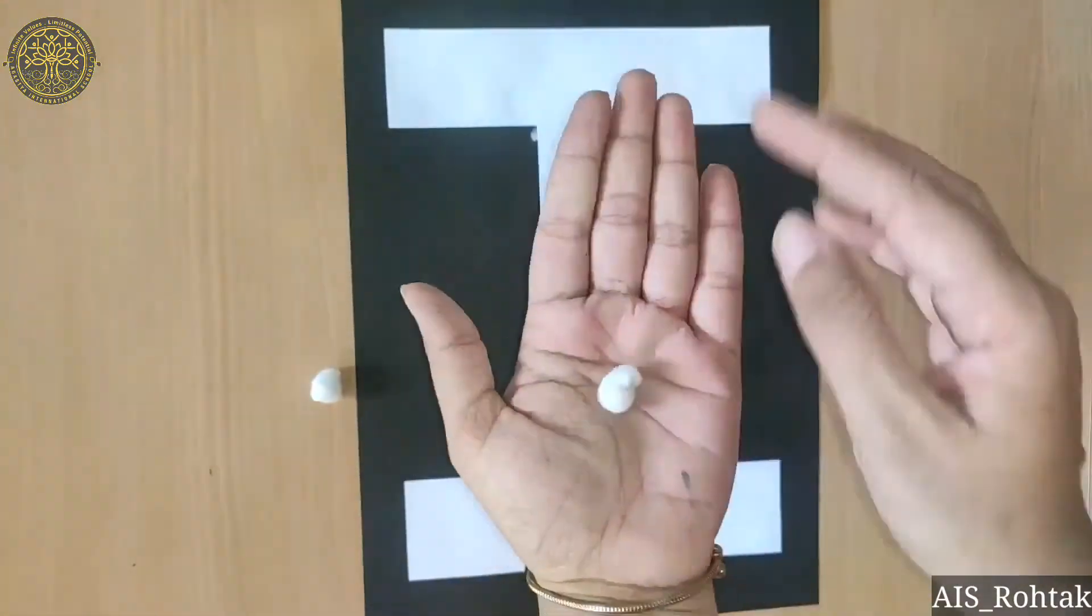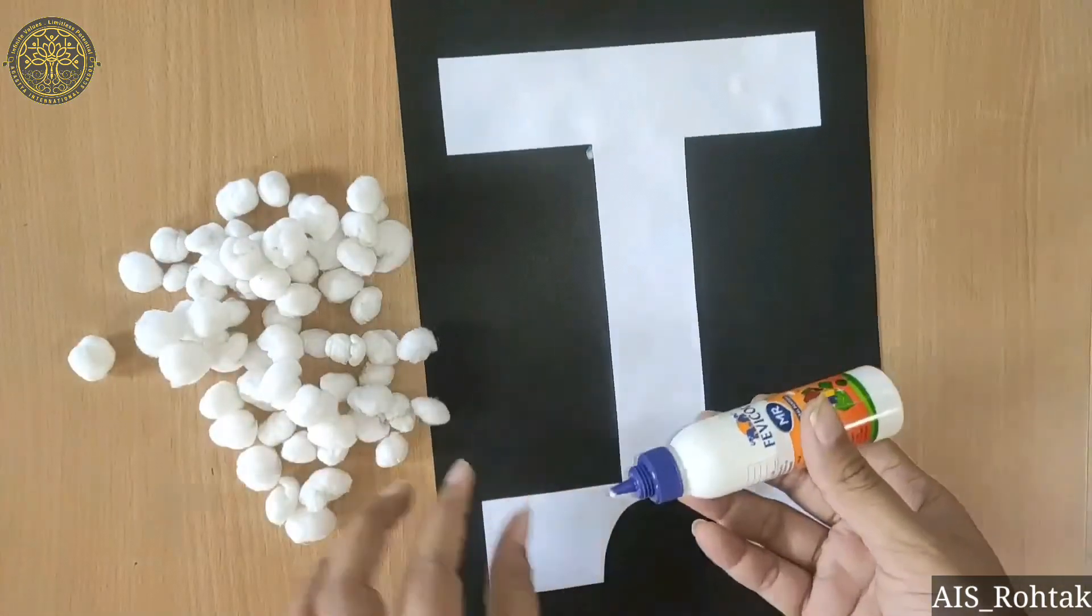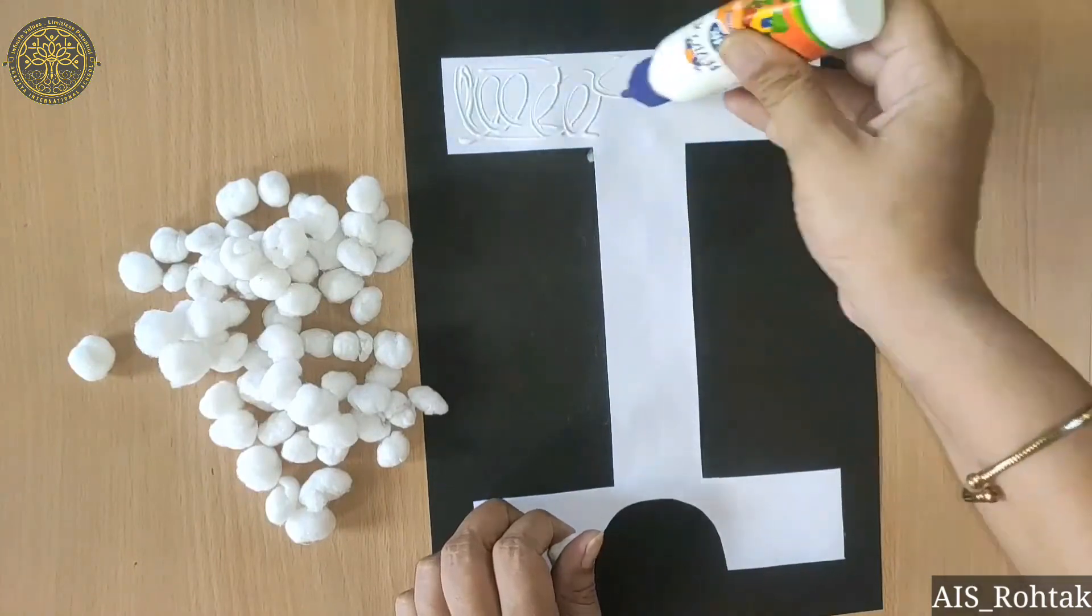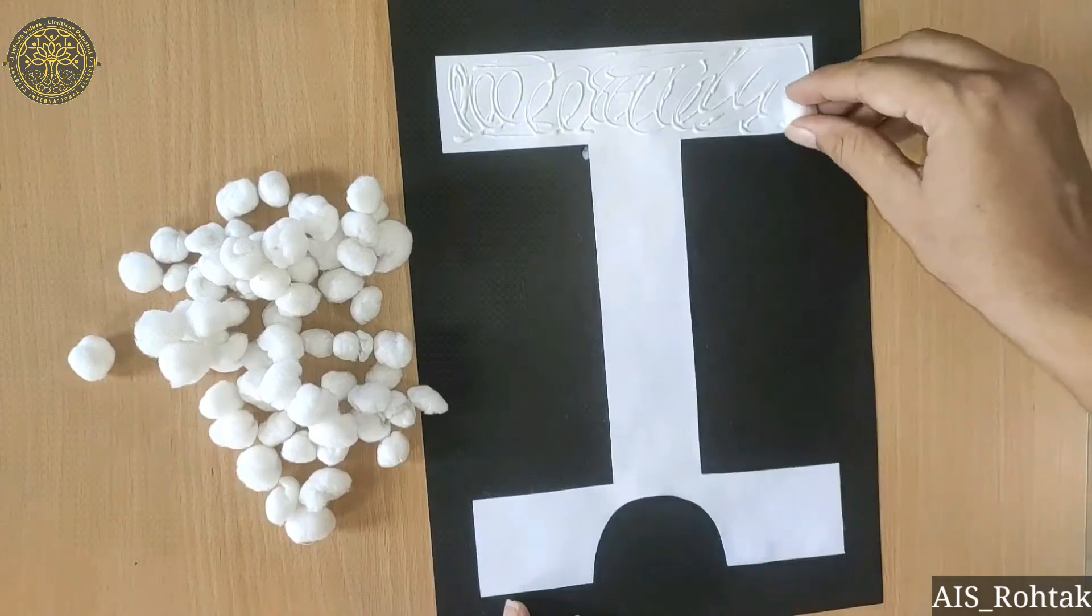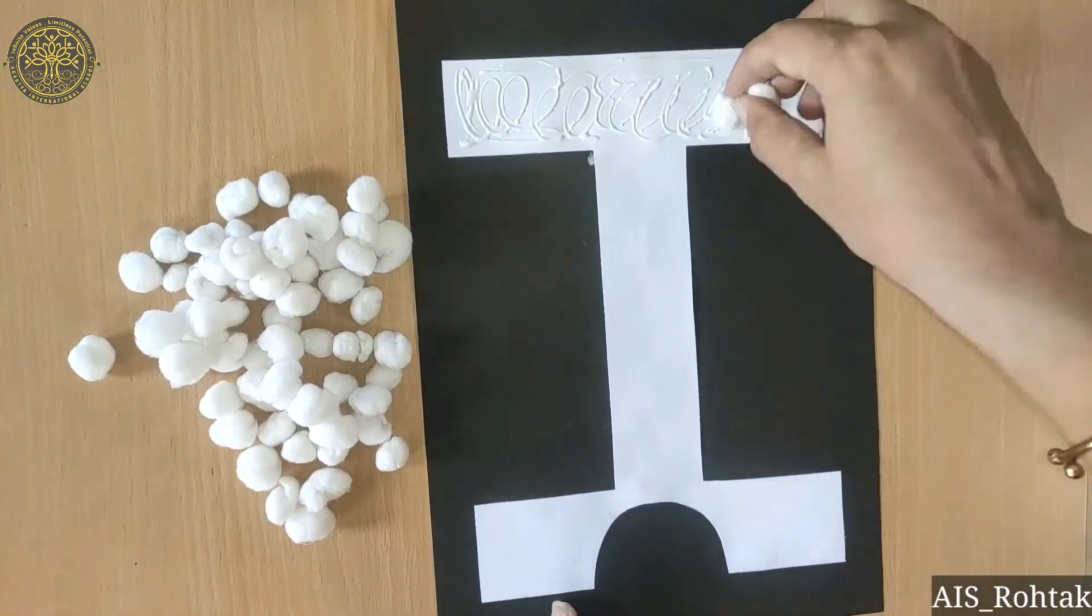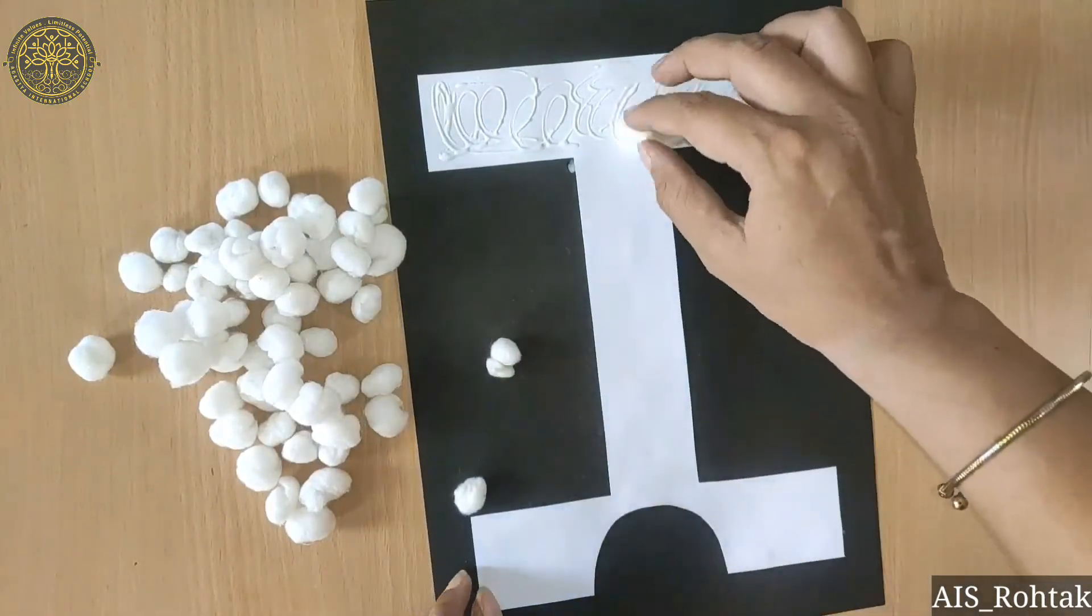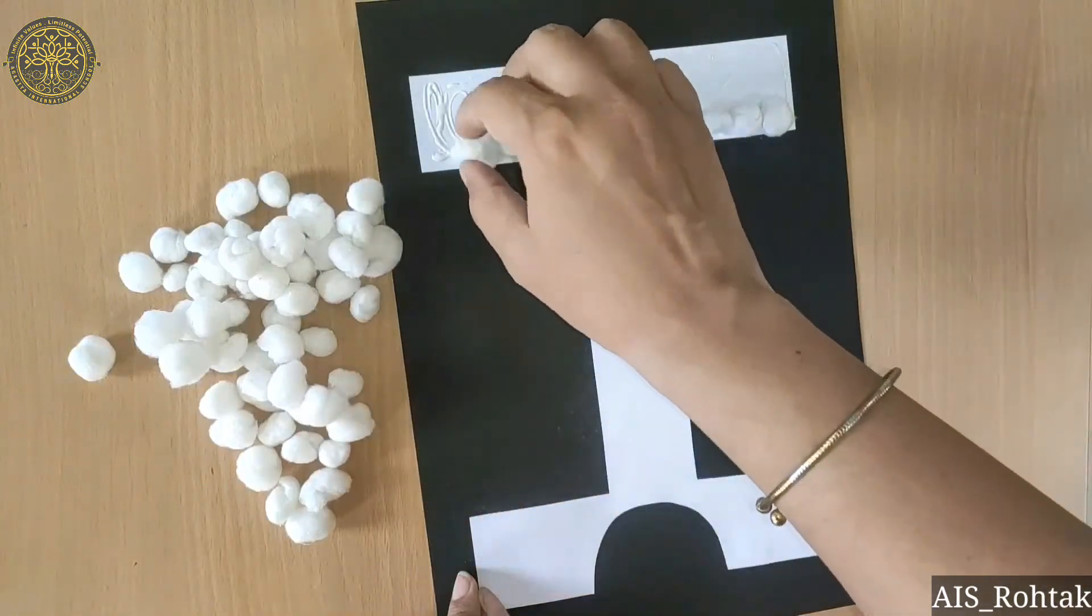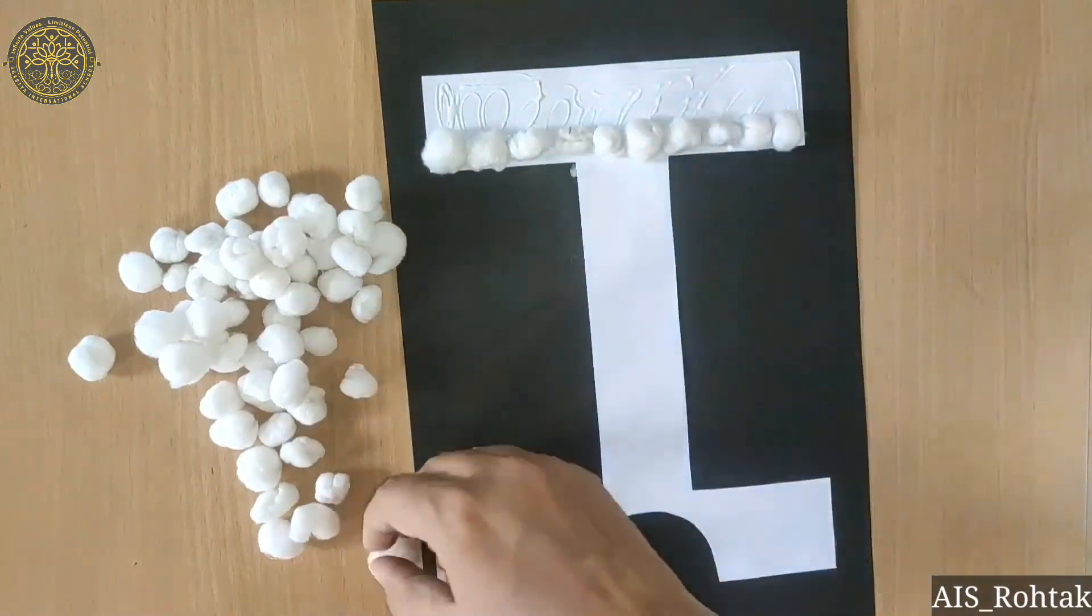We will make a lot of rolls. We will make it in small pieces and then we will paste them on the I shape.